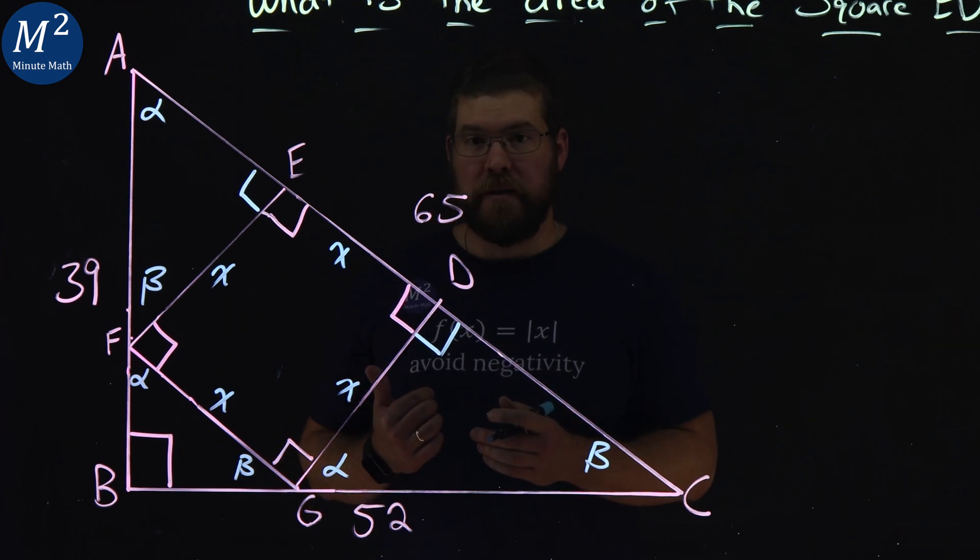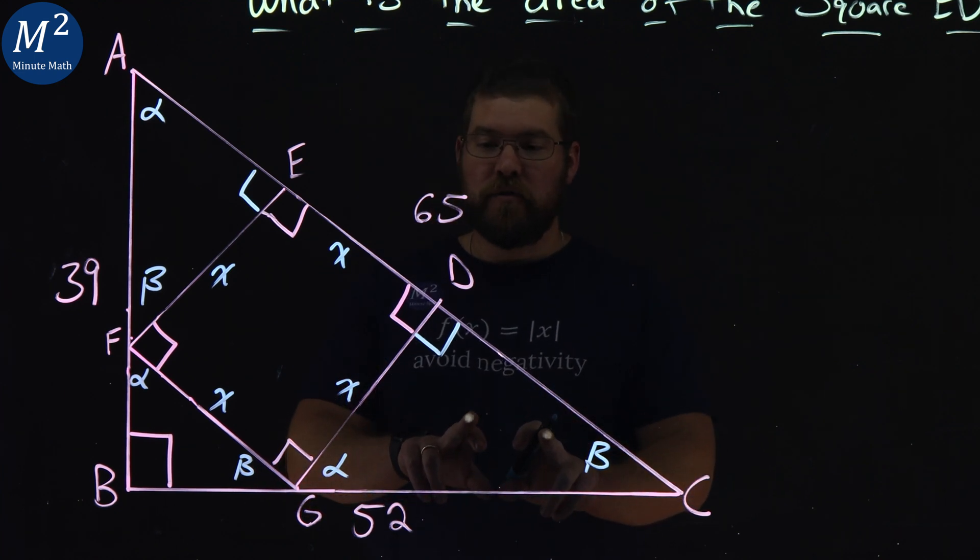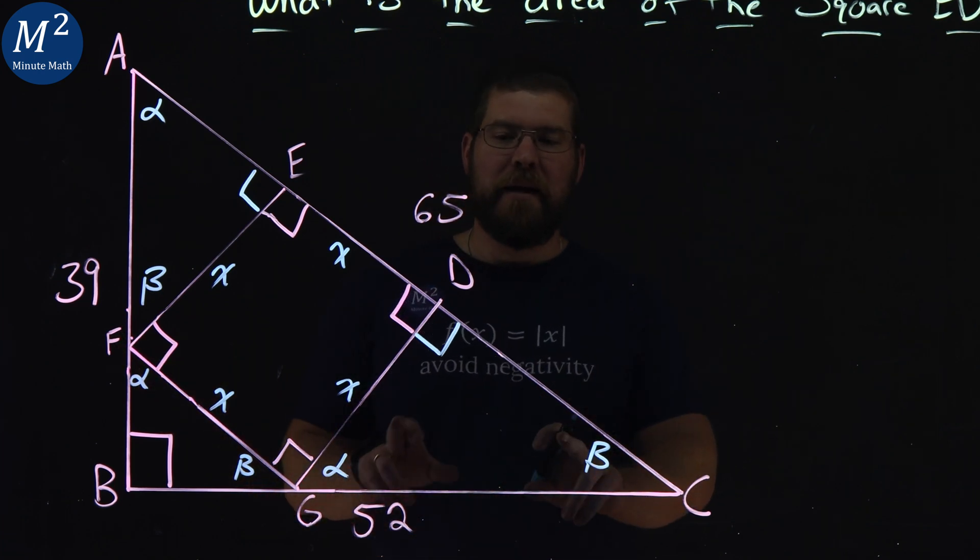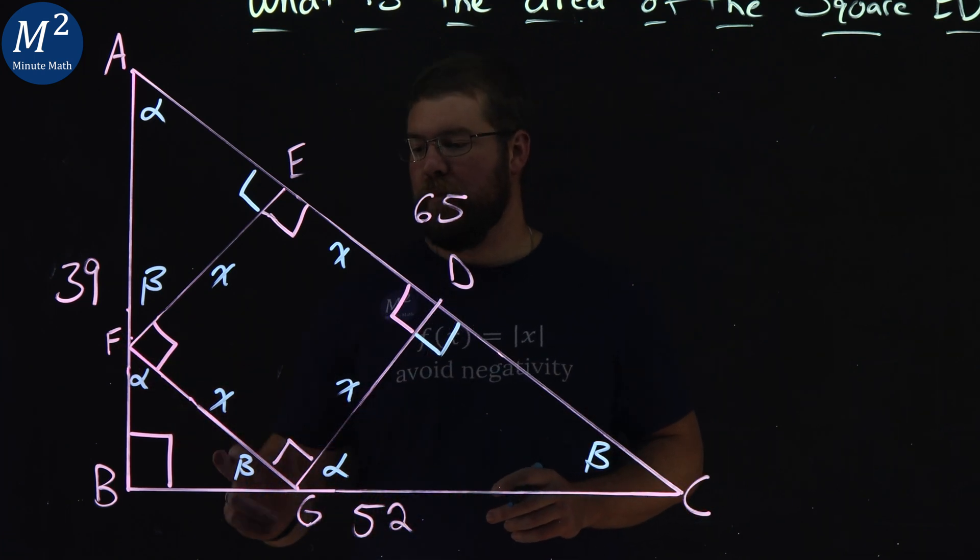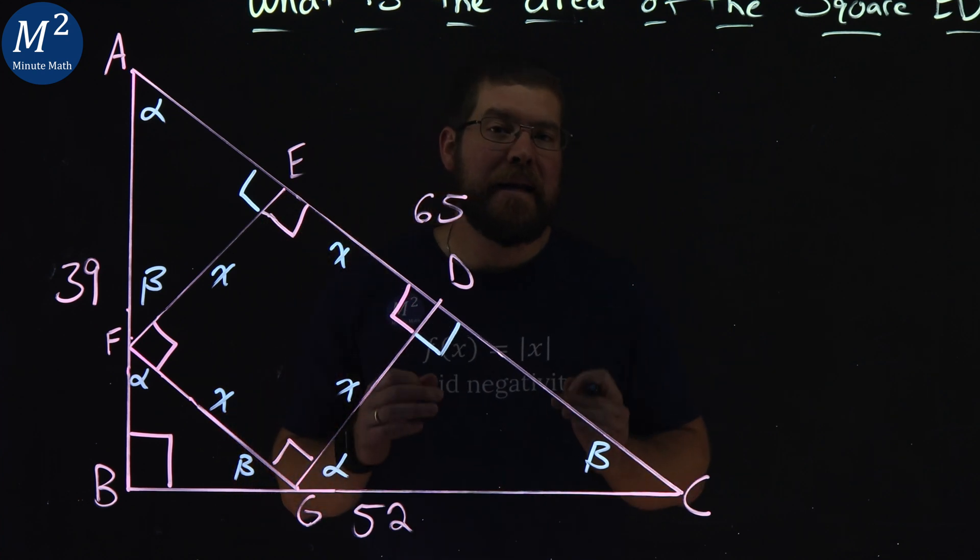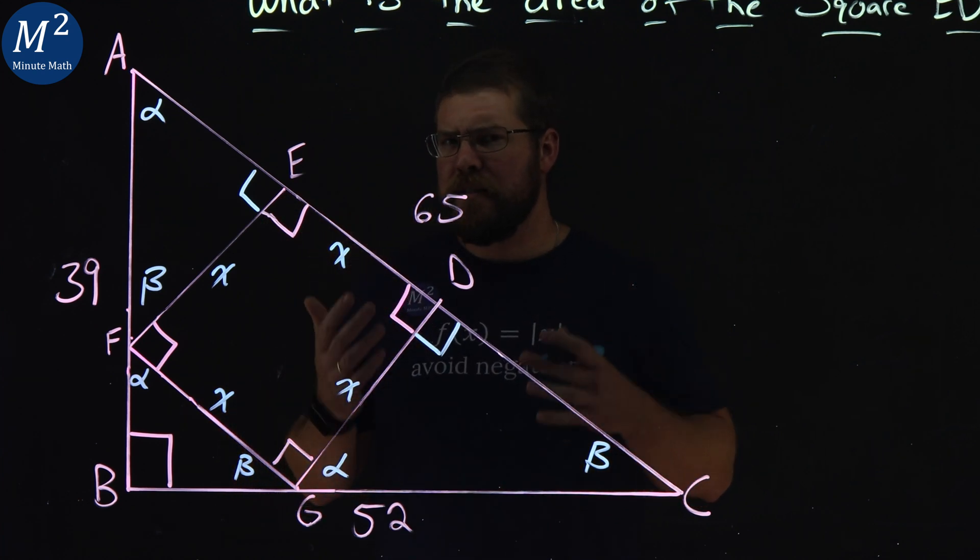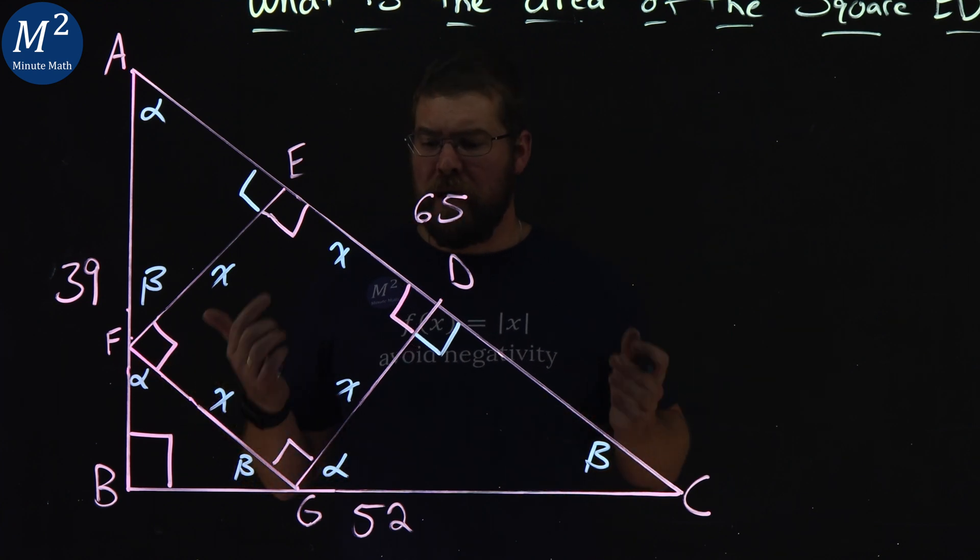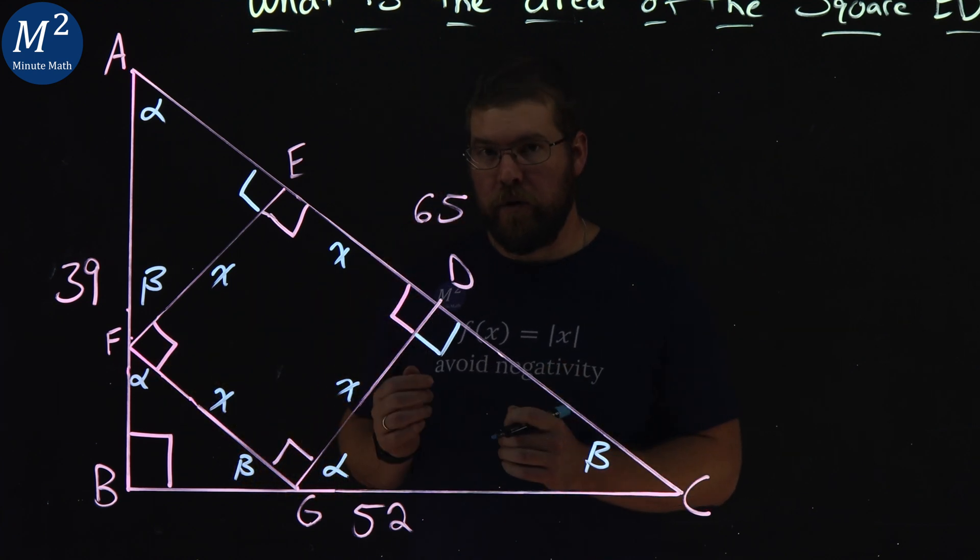Now, one of the things that's going to be helpful for us here is we have now all these triangles inside and the large one that have alpha, beta, then 90 degrees, meaning that all these triangles are similar. Now, so when I get to this stage, I like to go write them all out. So let's go write all the similar triangles in an order.